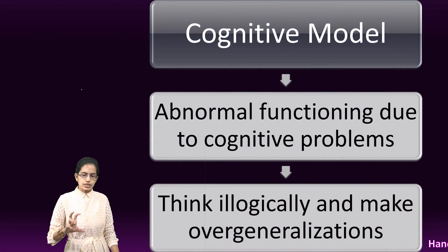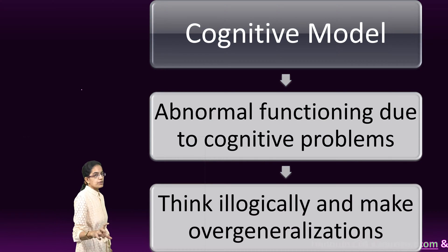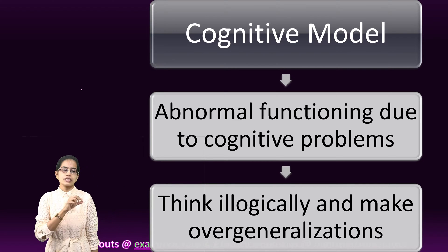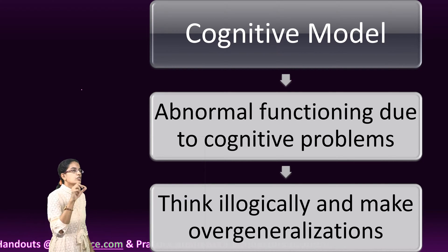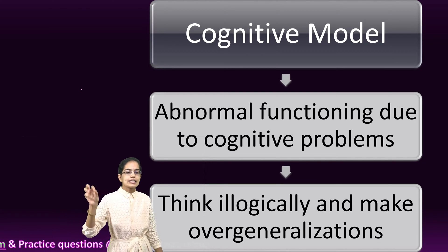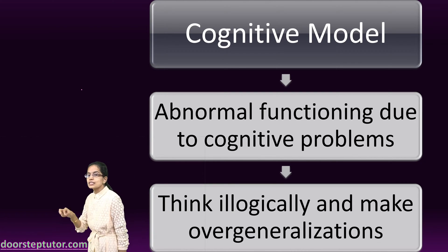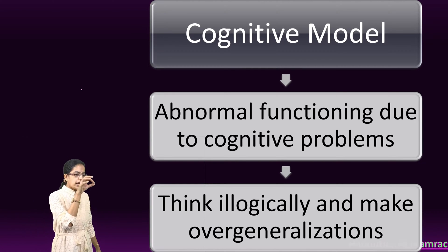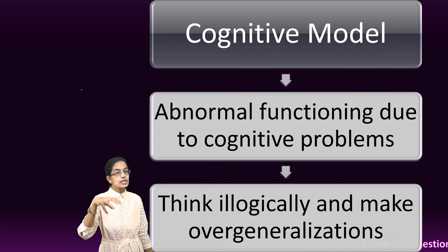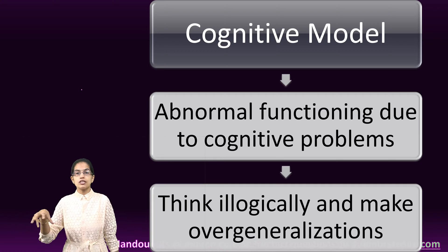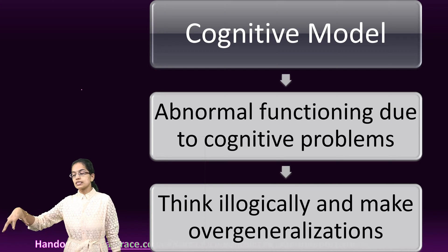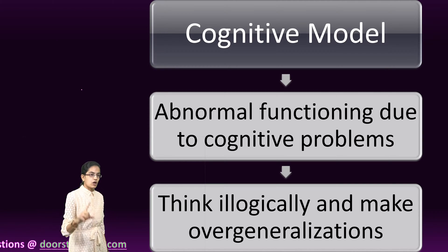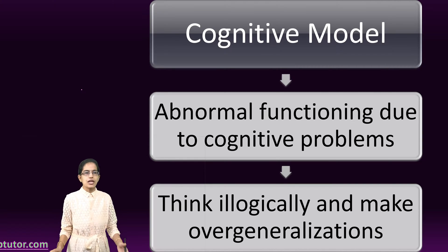The next is the cognitive model. Here, cognitive problems are taken into account — why a person thinks illogically, why there are overgeneralizations. A person might repeatedly think illogically, and this can be addressed by the cognitive model. The cognitive model helps understand that there is a reason behind illogical beliefs. For example, if a person says 'I am not wanted, I am ugly,' there is an irrational belief in existence that can be worked through.